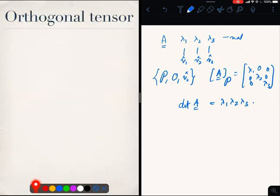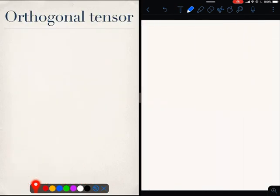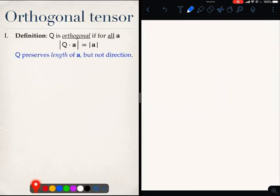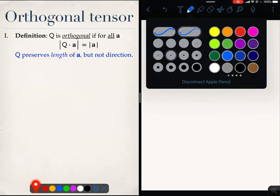Now, coming back to orthogonal tensors. So what is an orthogonal tensor? An orthogonal tensor Q is something which operates on any vector A and the outcome is such that the length of the vector remains unchanged. It preserves its length. Of course, it could have rotated, flipped, fallen over, done whatever.